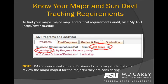For scheduling purposes it's very important to know what your current major is and the eAdvisor tracking requirements for it. When you log into your MyASU website you will see the My Programs and eAdvisor box located on the right-hand side. There you will find your current degree program, your major map, as well as your current track status.